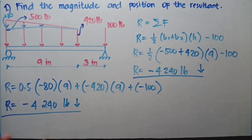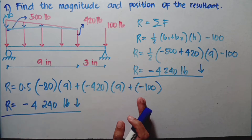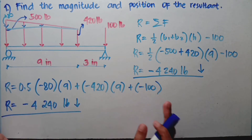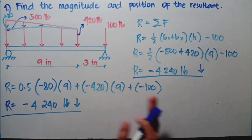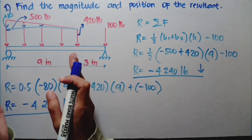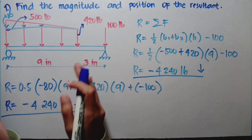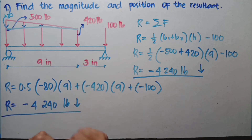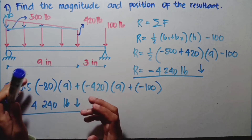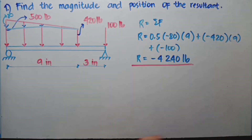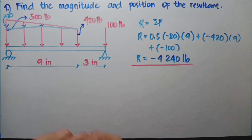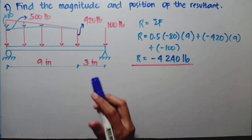So the same answer for the magnitude of the resultant. My advice: it's better to know how to do it this way — splitting the trapezoid — because when you get to the moment equation, it won't be as difficult. If you consider the whole trapezoid without splitting, it will be harder when you solve the moment equation. Now that we have the magnitude of the resultant, let's find where it is located on the given beam.